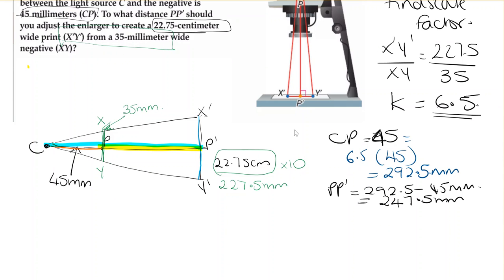We can check this using ratios. The relationship: 227.5 divided by 35 equals CP divided by 45, because we know they have to be in proportion.